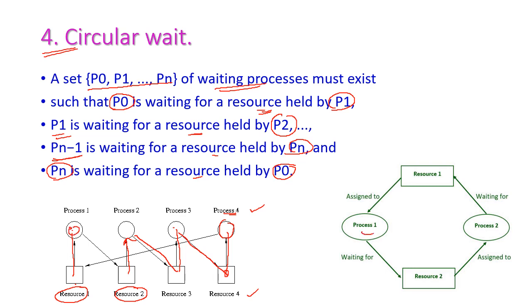Here is a simpler example with two processes: R1 is assigned to P1 and R2 is assigned to P2, but P1 is waiting for R2 which is already assigned to P2, and P2 is waiting for R1 which is already assigned to P1. This is called circular wait.